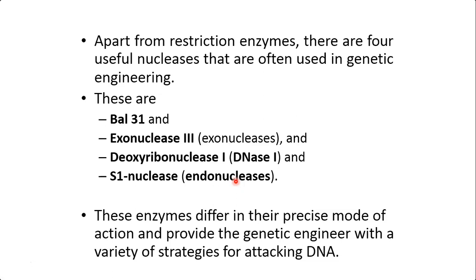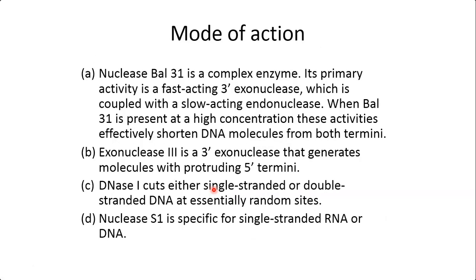In addition to restriction enzymes, there are other useful nucleases used in genetic engineering and recombinant DNA technology: BAL31, Exonuclease 3, Deoxyribonuclease 1 (DNase 1), and S1 Nuclease, which is an endonuclease. These enzymes differ in their mode of action and give genetic engineers different strategies for breaking DNA molecules into fragments. BAL31 is a complex enzyme whose main activity is a fast-acting 3' exonuclease.